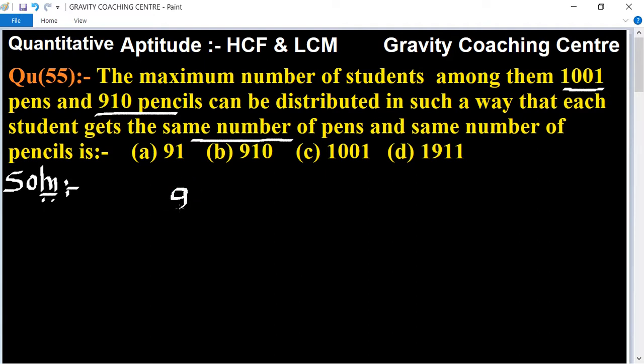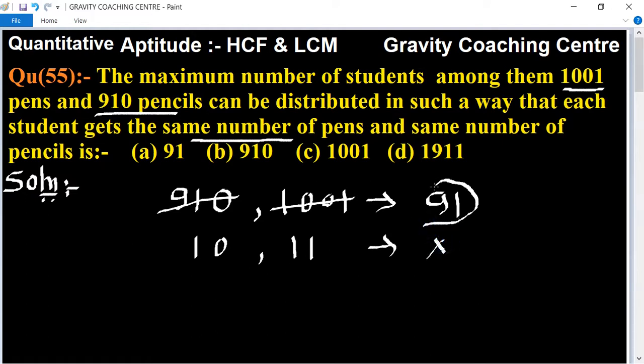910 and 1001, both numbers are divisible by 91. And 10 and 11 are not divisible by any number other than one, so our HCF is